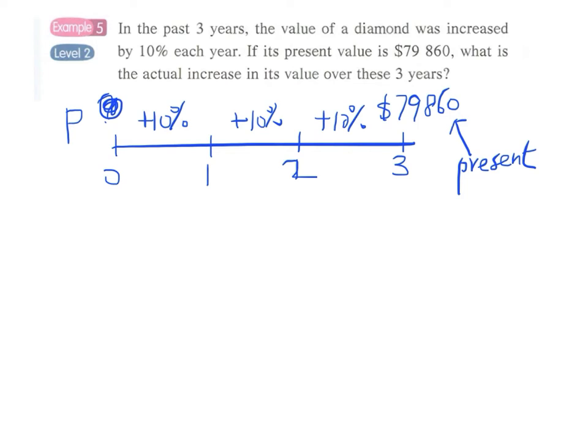We can easily set up an equation connecting P, 10%, and this present value $79,860. We have P times (1 plus 10%) to the power 3 equals $79,860.